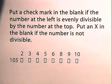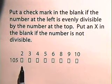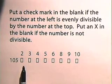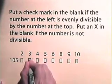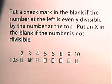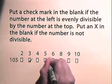Now let's look at the number 105 and determine its divisibility. 105 is not divisible by two because the last digit is not an even number. It is divisible by three because the sum of the digits — five plus zero plus one — is divisible by three. It is not divisible by four since the last two digits are not divisible by four. It is divisible by five since the last digit is a zero or a five.